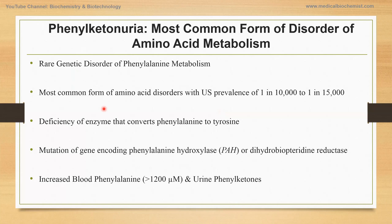Phenylketonuria is the most common form of disorders of amino acid metabolism and is a rare genetic disorder of phenylalanine metabolism. The prevalence in the US is 1 in 10,000 to 1 in 15,000, and it is caused by deficiency of enzymes that convert phenylalanine to tyrosine. The two main enzymes involved are phenylalanine hydroxylase and dihydrobiopterin reductase, and mutation in either gene can lead to phenylketonuria.